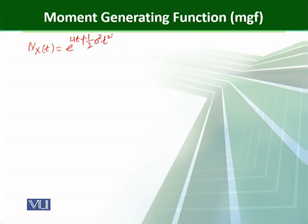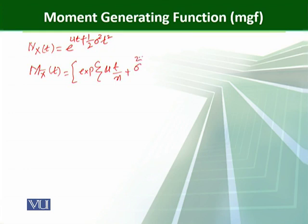Because we are interested to find the MGF of the sample mean of the normal distribution, we write M_Xbar(t) = E[e^(t·Xbar)]. Substituting Xbar = (X1 + ... + Xn)/n, we get the exponential expression with mu times (t/n) plus sigma squared times (t/n) squared divided by two.